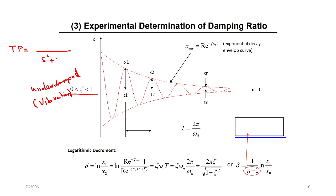What's the transfer function for a second order system in the standard form? It is s² + 2ζωₙs + ωₙ². So what are the parameters you need to know in order to define your system? You need to know how much zeta, and you need to know omega_n. If you know omega_n and zeta, you know your system. This is the transfer function we don't know for the system.